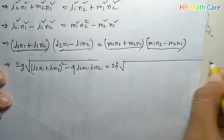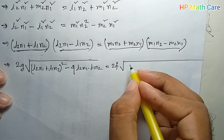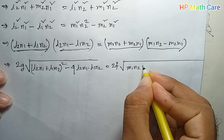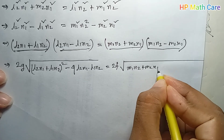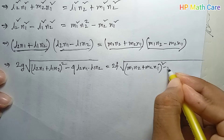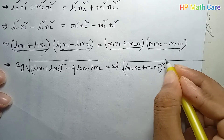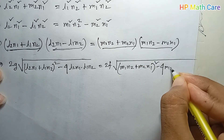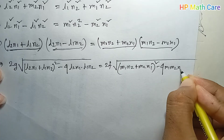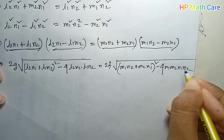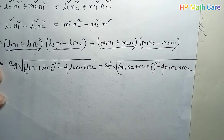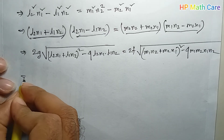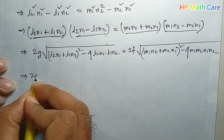I'm going to put this one. A minus B — M1, N2, plus M2, N1. This is A plus B, which is minus 4 AB. The same thing is M1, M2, and N1. This is 4AB. This is the same. Okay, just — this is 2G.